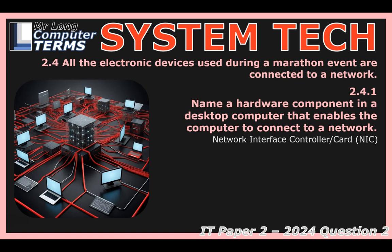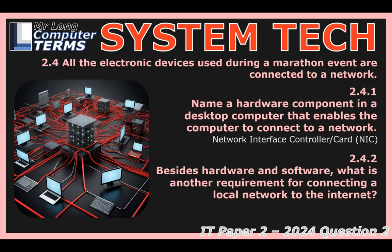Thinking about the marathon's network needing to reach the outside world: besides the hardware like the NIC, and the software running on the computers, what's the third essential piece needed to connect to the Internet? That crucial third piece is the Internet service provider — the ISP. The ISP is the company that provides the connection from your local network to the massive global Internet, managing the infrastructure and the big pipes that link you up. NIC for the local connection, ISP for the global one.